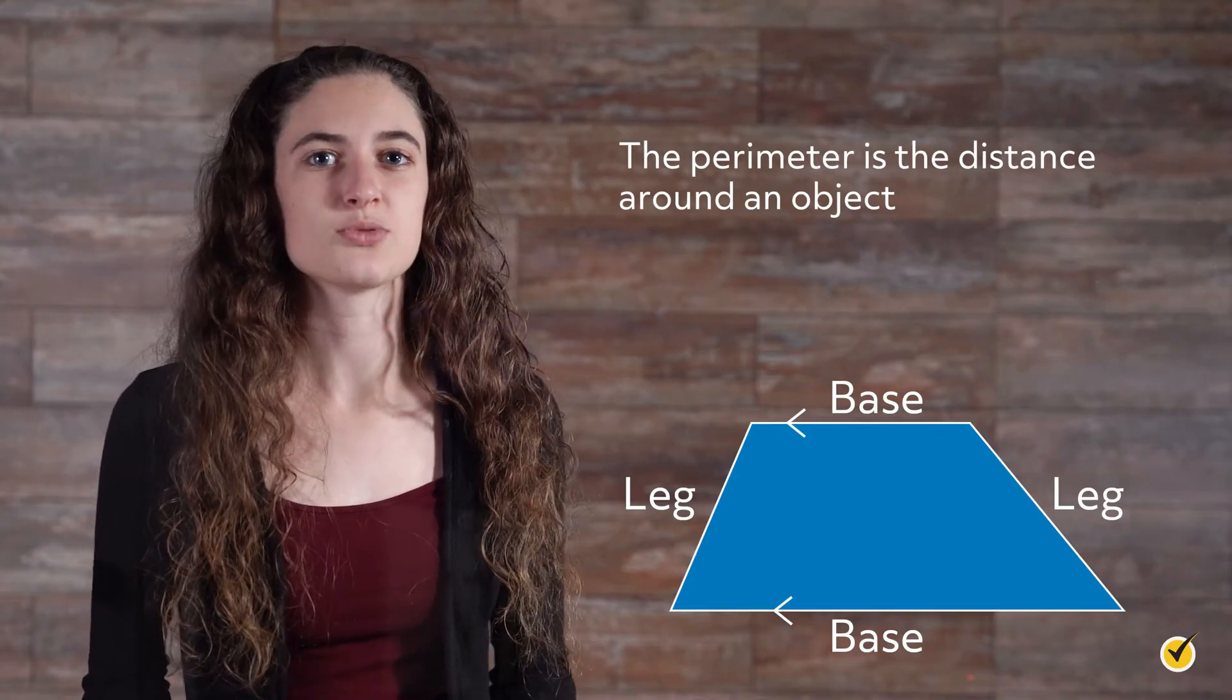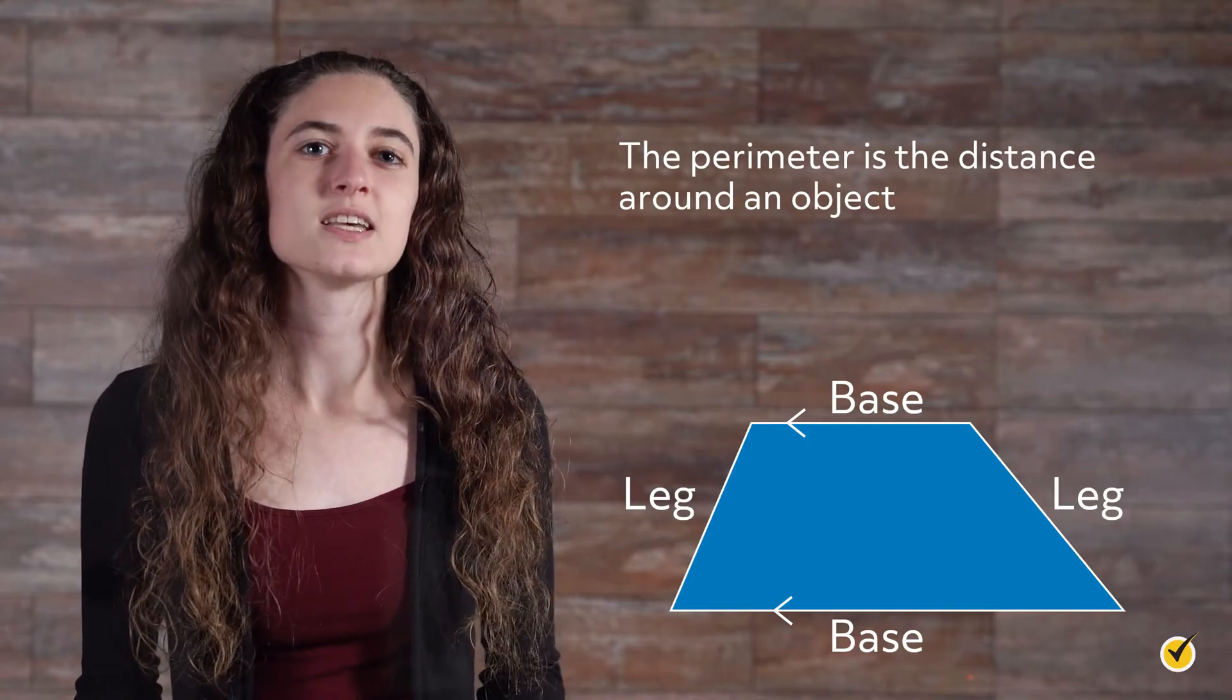The perimeter is the distance around an object. For instance, if we wanted to build a fence around a trapezoid-shaped yard, we'd need to know the perimeter of the yard to know how much fencing to buy.